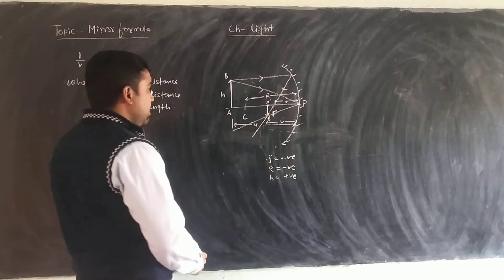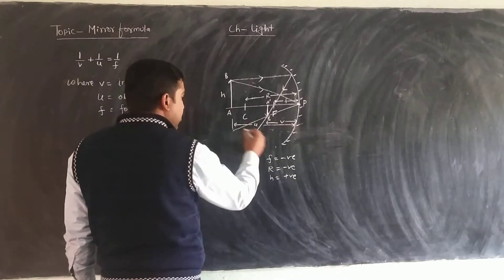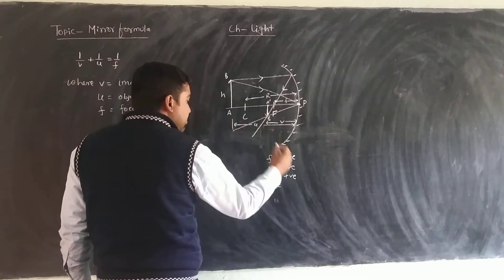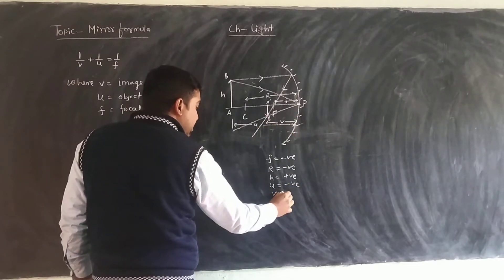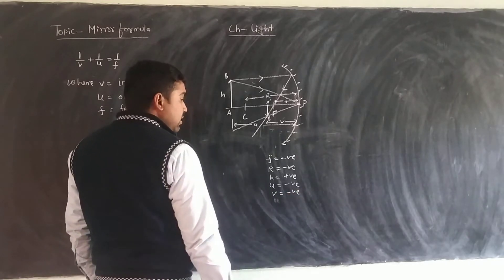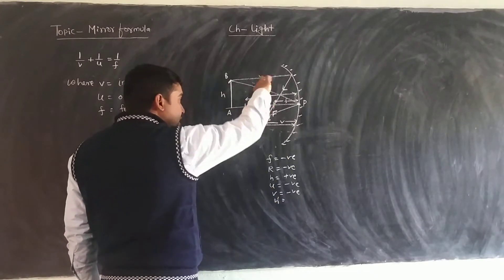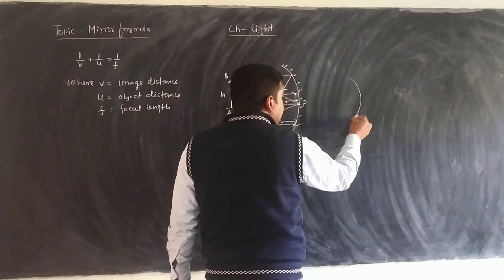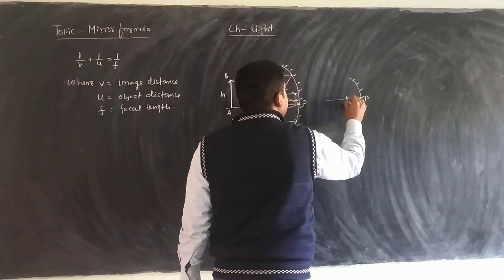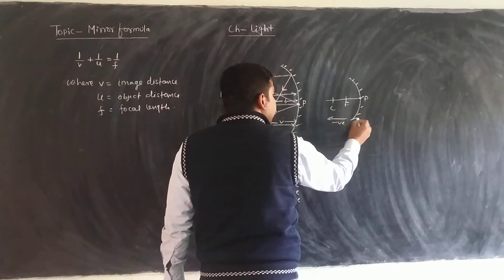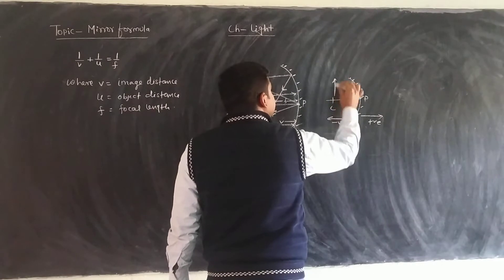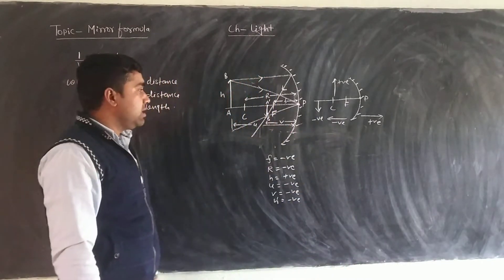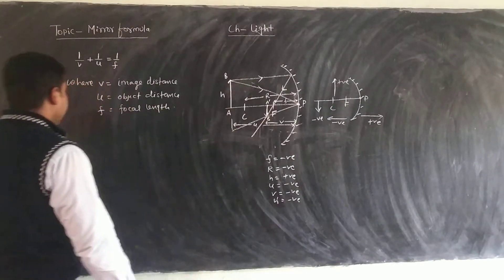We can prove this formula. The object is placed to the left side of the pole, so u will be negative. The image distance v will also be negative as it is on the left side. The image is below the principal axis, which is also negative. This is the sign convention for a concave mirror. So f is negative, and the condition is negative. We need to prove this through a geometric proof.